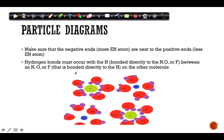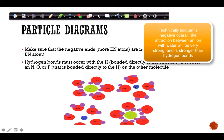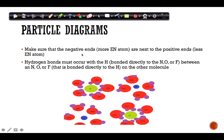Here's another example involving a particle diagram with an ionic compound being dissolved. The positive sodium ion will be strongly attracted to the oxygen end of water — make sure positive aligns with negative. A hydrogen bond would only occur between the oxygen of one water molecule and the hydrogen of another water molecule.